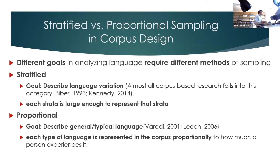However, we might also sample proportionally in order to describe what's going on in typical language, so each language variety is represented in the corpus proportionally to how much a person sees it. Whereas most research in corpus linguistics has focused on variety — what varies across the strata — we haven't really developed methods for describing central tendency or typicality very well.